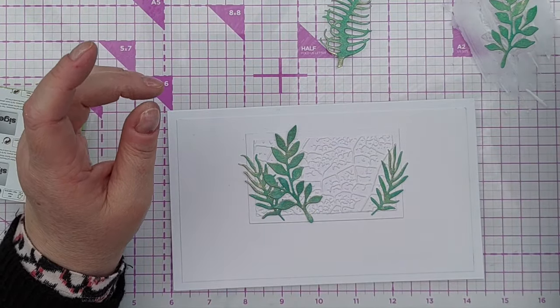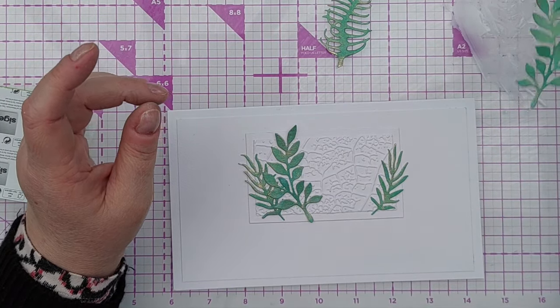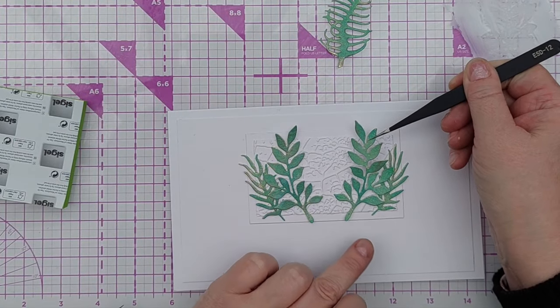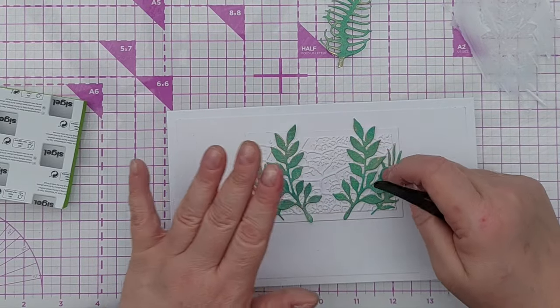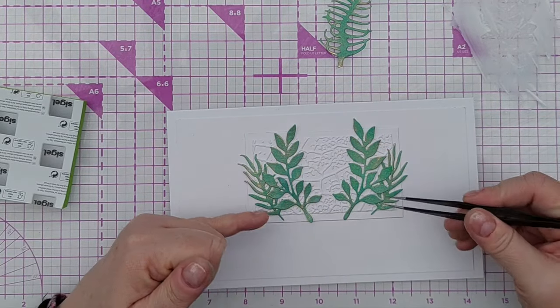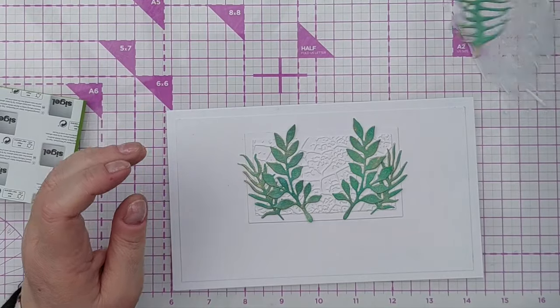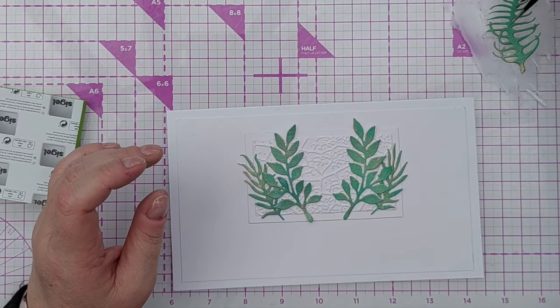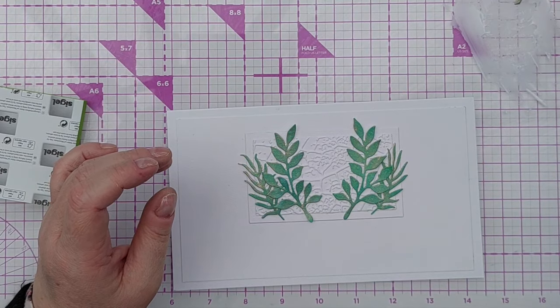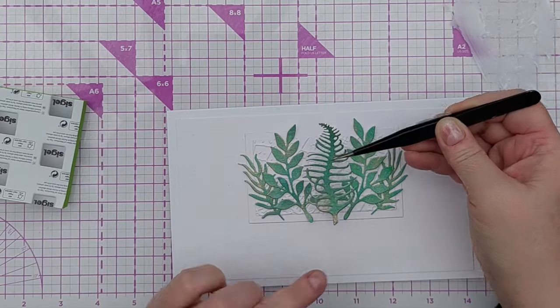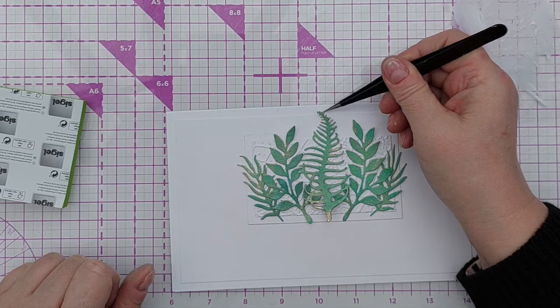Now, you could, if you wanted, do each type of leaf in a different green. That would look nice if you wanted a bit more variation. So you could do, say, the smaller ones in a paler green and then a darker green and then the darkest green in the middle. That would bring the attention to the middle of the cluster of leaves.